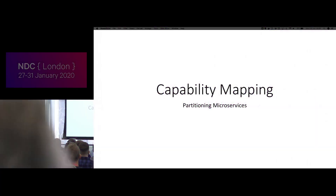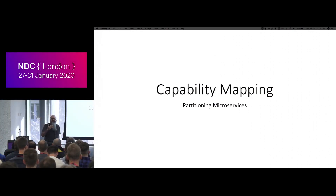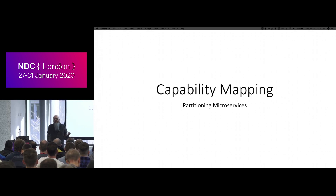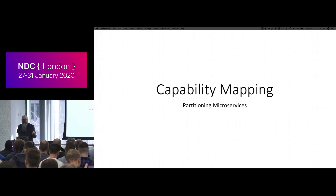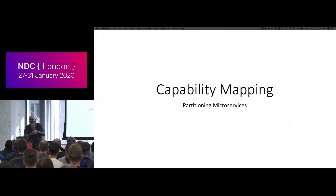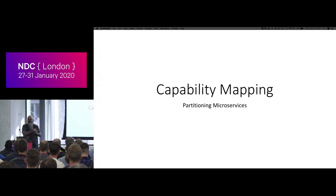What I'm going to talk about today is how we partition systems into microservices. Part of the reason I got prompted to have this discussion is that I've been seeing consistently lots of bad decisions about how people are partitioning. People get the idea that their team is going to own a microservice and work on it independently from other teams, but quite often the boundaries people pick are really just quite arbitrary, and we're going to get ourselves into a lot of difficulty.